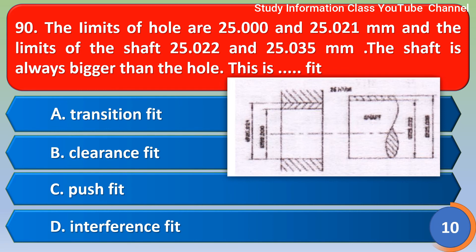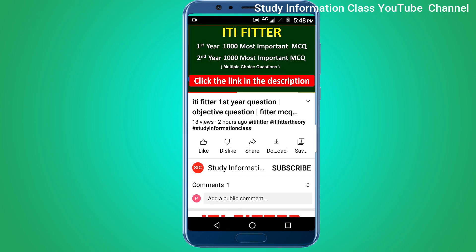Next question: The limits of the hole are 25.000 and 25.021 mm, and the limits of the shaft are 25.020 and 25.035 mm. The shaft is bigger than the hole; this is interference fit. The correct answer is option D, interference fit.